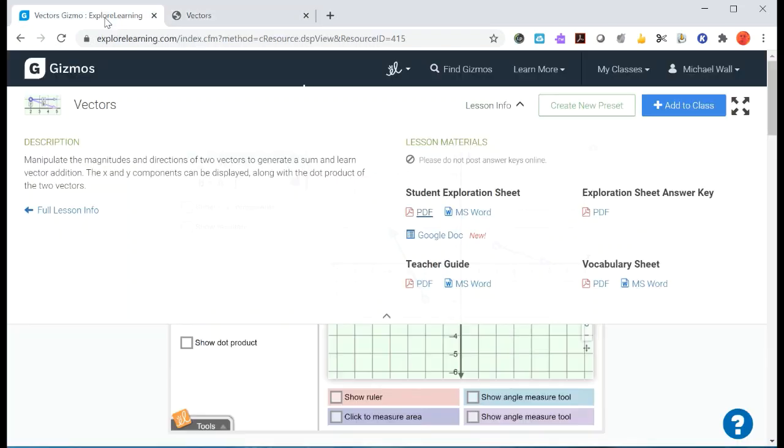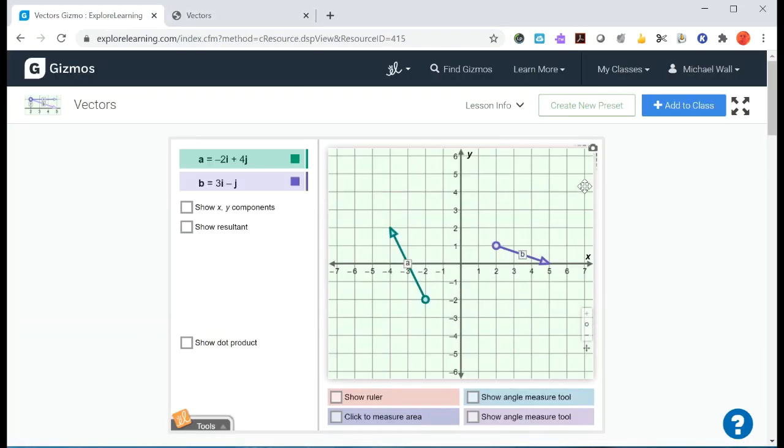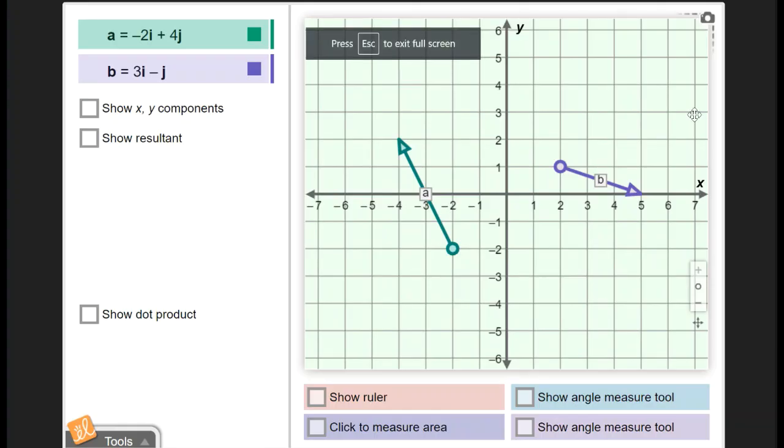This particular Gizmo is a little bit different in terms of the way it is doing vectors than we do in class. One of the things that you notice up here is that we've got i and we have j. So these are called unit vectors.